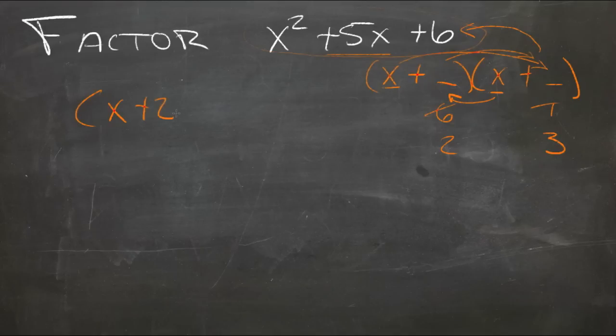We should have x plus 2 or 3 and x plus the other one, 2 or 3. And we can check it by actually FOILing it out.